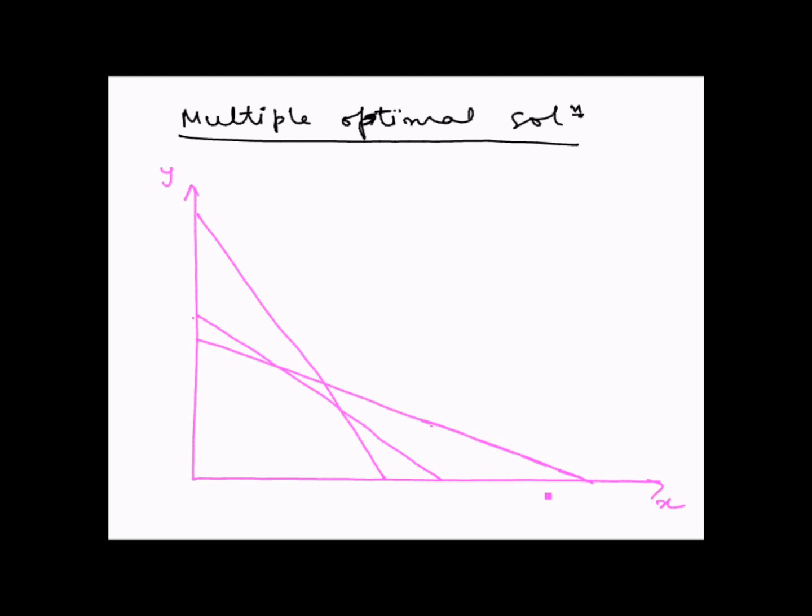Suppose all these constraints have an inequality sign of less than or equal to and have the feasible solution in this direction as shown.